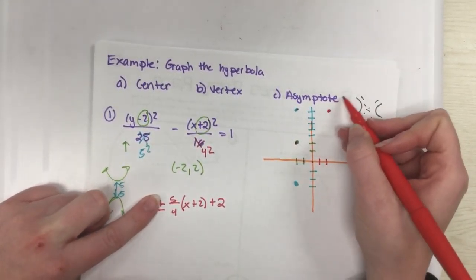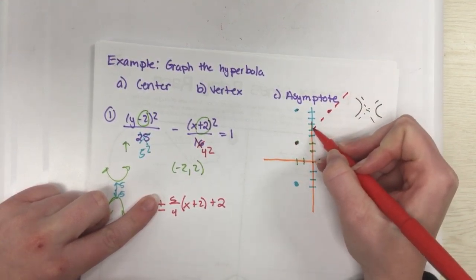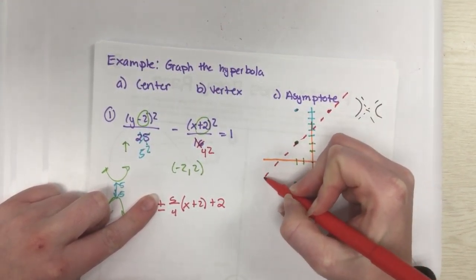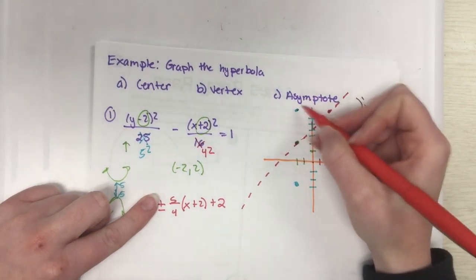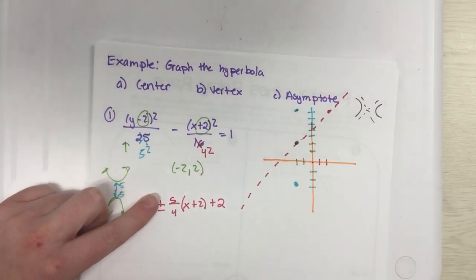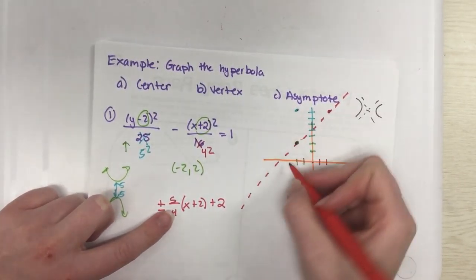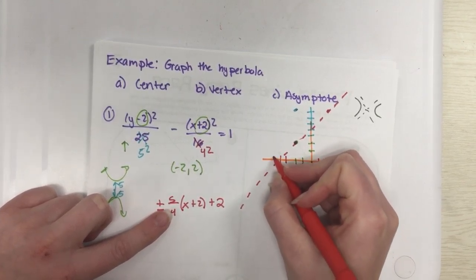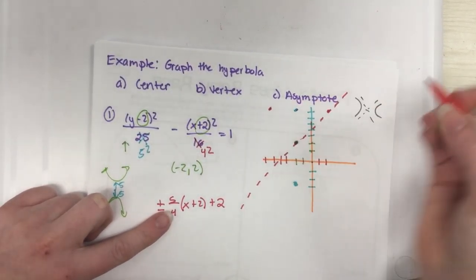I don't really need the equation because all I care about is I'm centered here, which I'm already there, and now I need to do my rise over my run. I already went up 5 so now I just need to go over 1, 2, 3, 4. So there's that first point. This is the positive sloping asymptote because I went up and over, I went up and right.